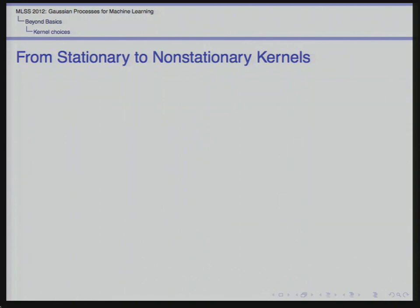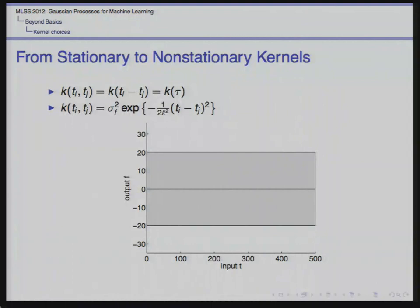Up to now, all the kernels we've discussed are stationary kernels. Those who've taken stochastic processes courses will remember that stationary kernels are functions of two arguments, but in reality are only a function of the difference between those arguments — written t_i minus t_j, or k(tau). In a picture, a stationary kernel means it doesn't matter where you are over time; the prior looks the same. The only thing that matters is the difference between time points — how much variance there is between them.